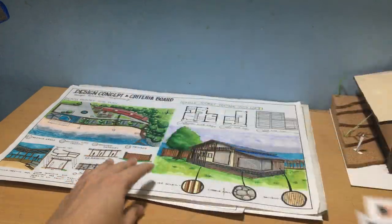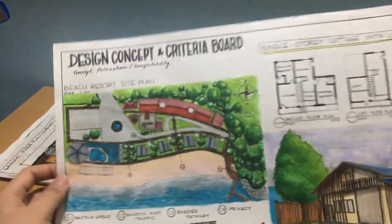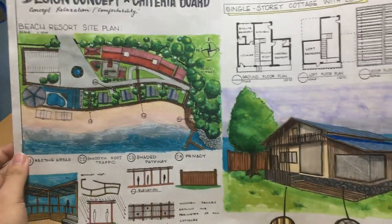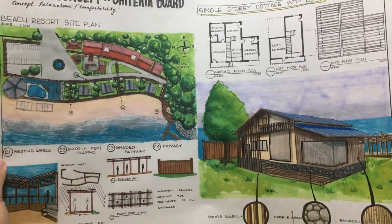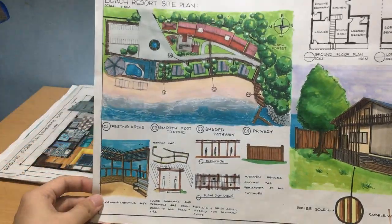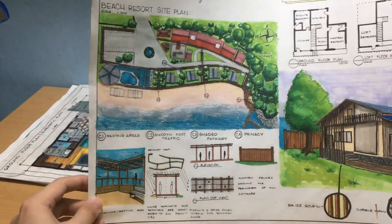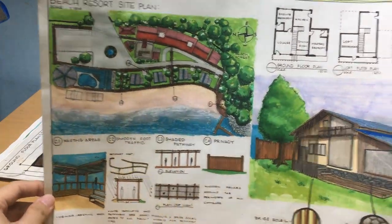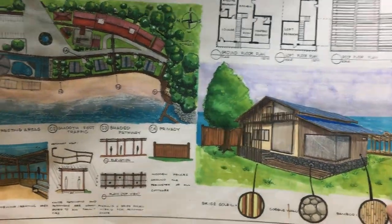The next exercise is the design concept and criteria board. I just searched the internet to see examples of design criteria boards, and this is what I came up with.